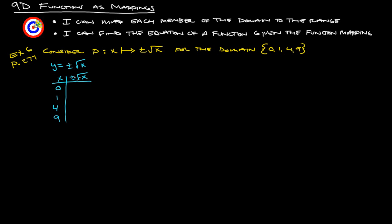So we're going to plug in 0, 1, 4, and 9. When you plug in 0 you get plus or minus the square root of 0, which is just 0. When you plug in 1, the square root of 1 is 1, but it's plus 1 and also negative 1. Plug in 4 and that is 2, because the square root of 4 is 2, so positive 2 and negative 2. And then you plug in 9 and you get 3 out, so that's positive 3 and negative 3. So this is what we get for our range.